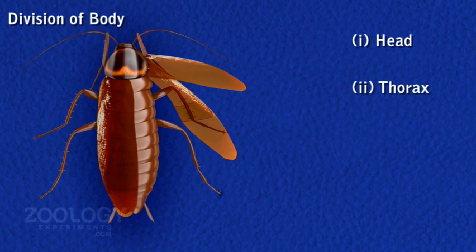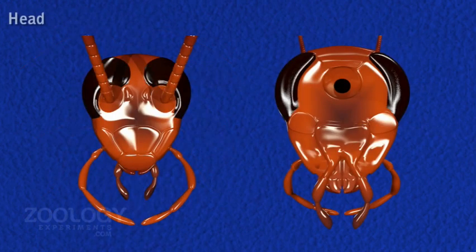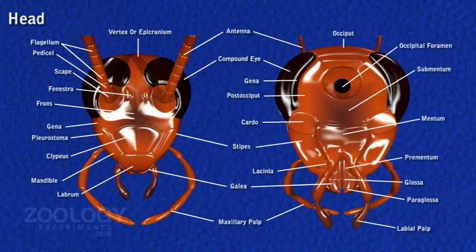Division of body: the body of cockroach is distinctly divided into three segments or tagmata — number one: head, two: thorax, and three: abdomen. The anterior region of the body, or head, is small and triangular. It is situated at right angle to the body and is hardly visible in dorsal view.